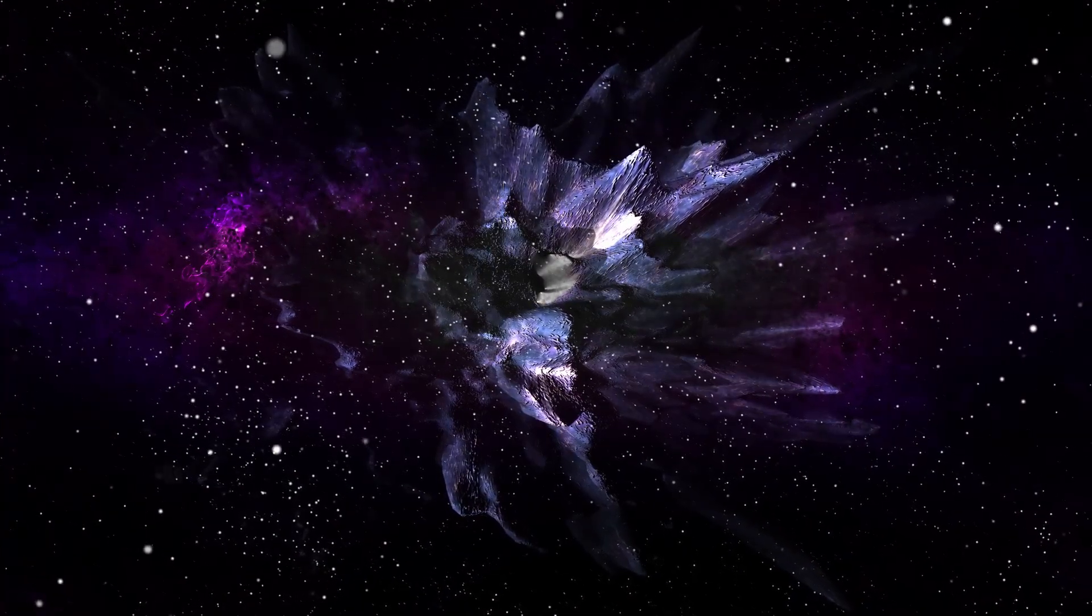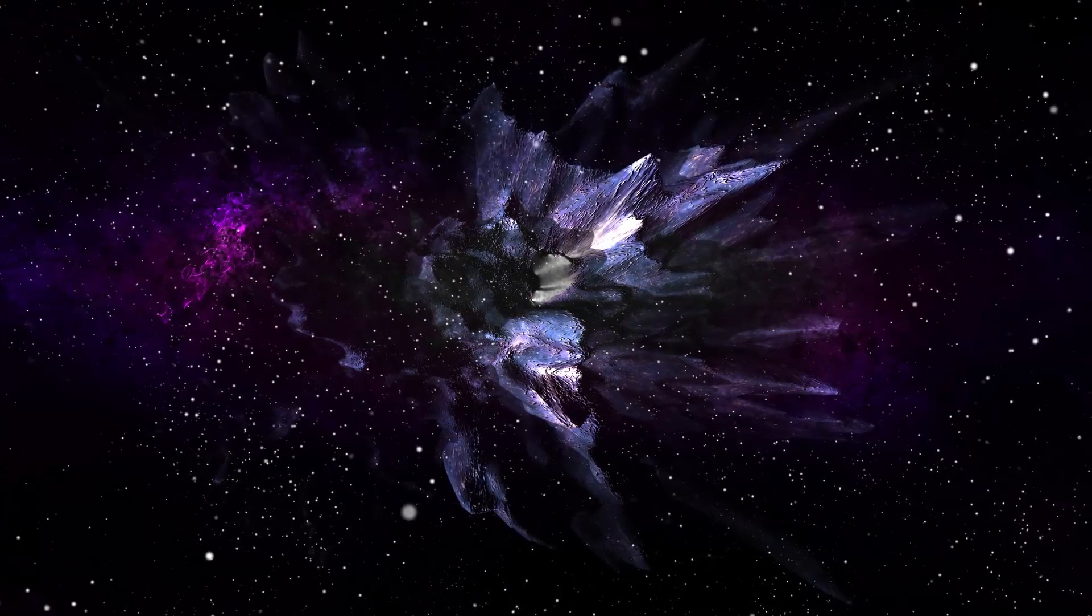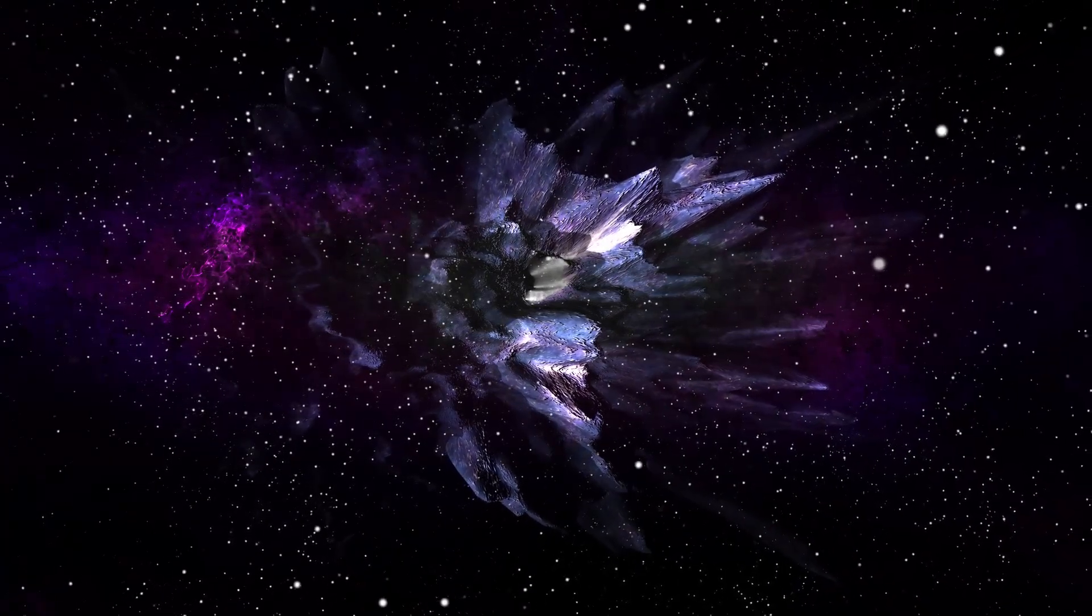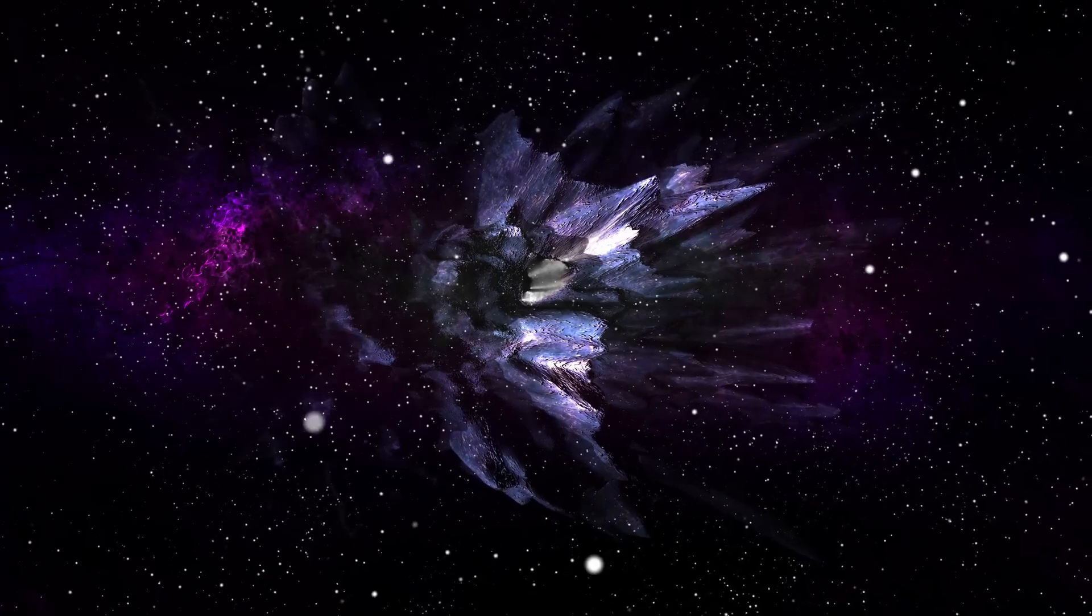The Sun emits a constant stream of charged particles known as the solar wind, which creates the auroras on Earth and other planets with magnetic fields.